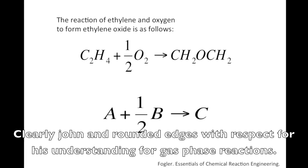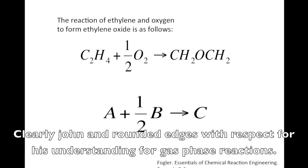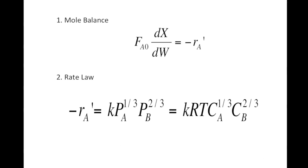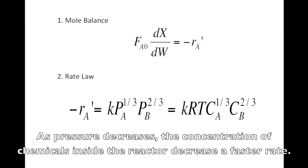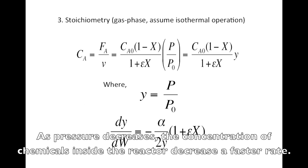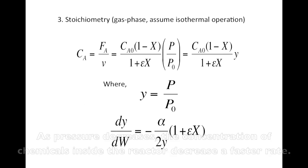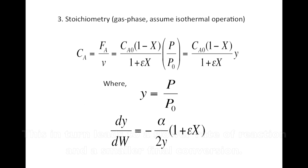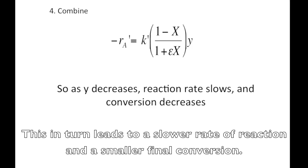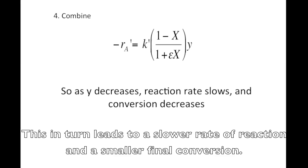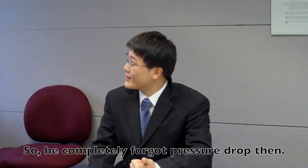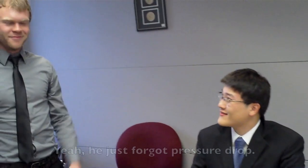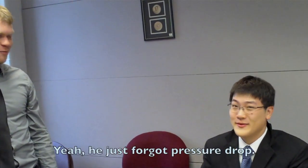Clearly, John had blind spots with respect to his understanding of gas phase reactions. As pressure decreases, the concentrations of chemicals inside the reactor decrease at a faster rate. This, in turn, leads to a slower rate of reaction and a smaller final conversion. So, he completely forgot pressure drop. Yeah, he just forgot pressure drop.